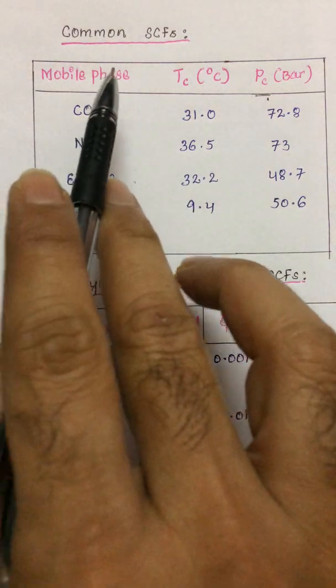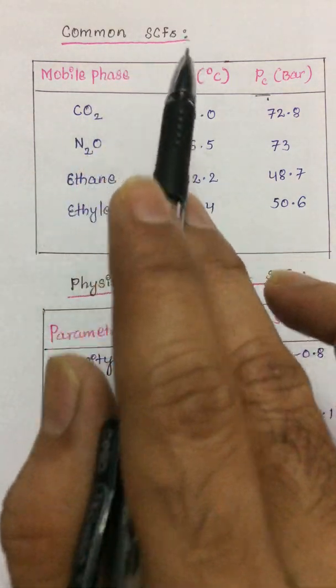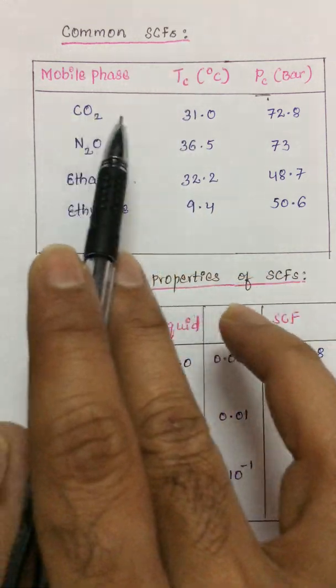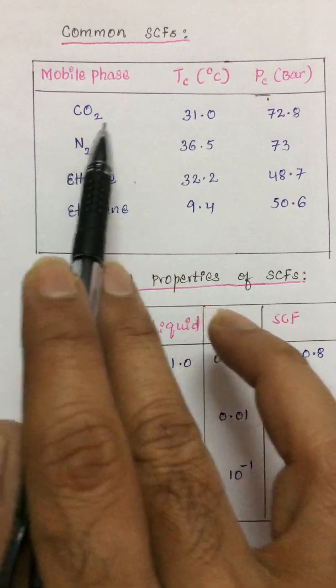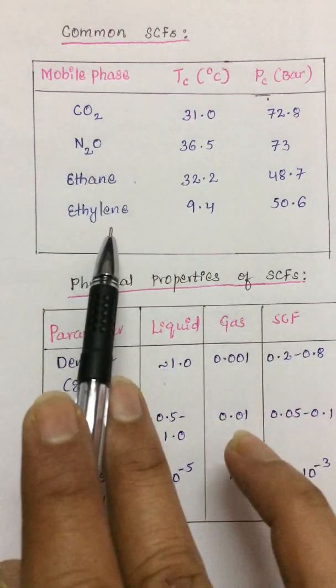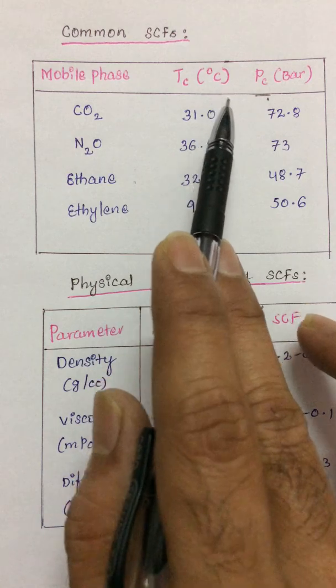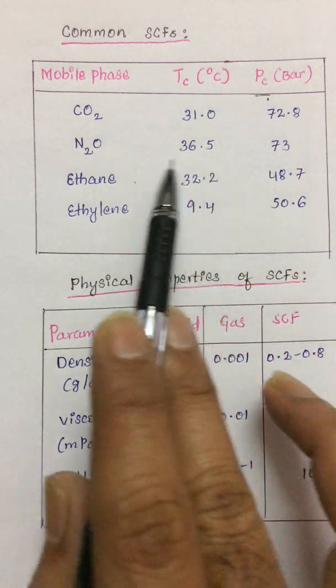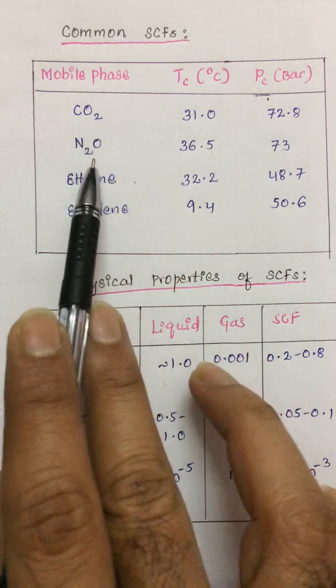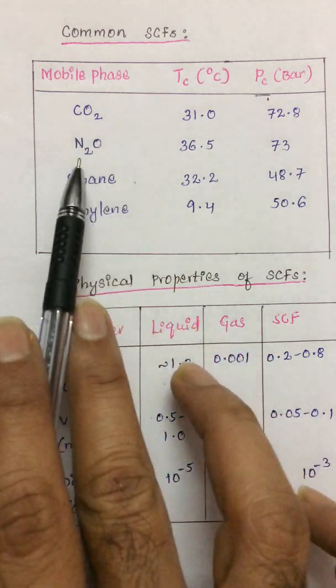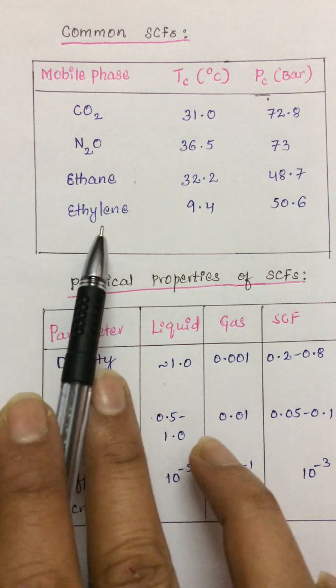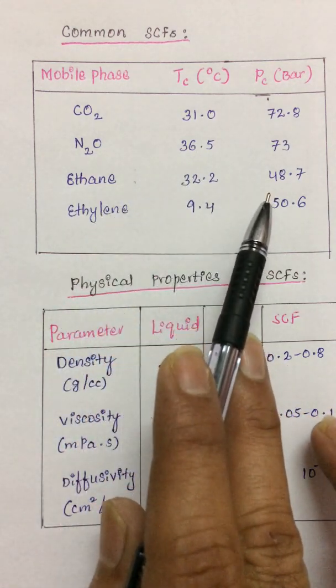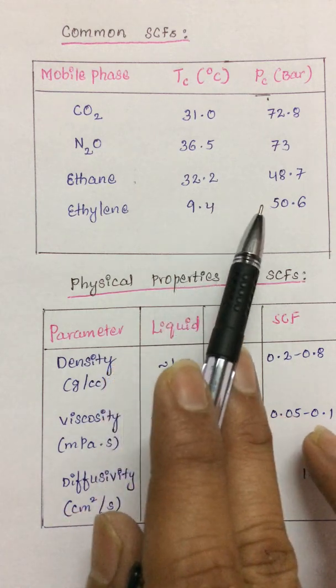Let us see some common supercritical fluids that are used as mobile phases. The four important supercritical fluids we're going to consider are carbon dioxide, nitrous oxide, ethane, and ethylene. The critical temperatures and critical pressures have been given. The most important thing we can find here is, apart from carbon dioxide, we can also use nitrous oxide, ethane, and ethylene. All the critical temperatures as well as critical pressures are highly accessible, but there are certain limitations for using the other mobile phases or supercritical fluids.